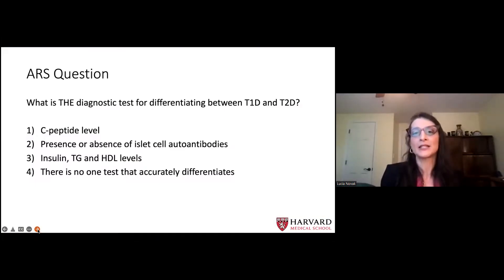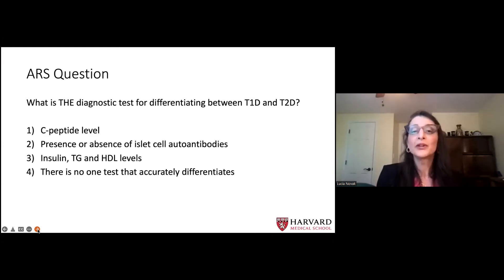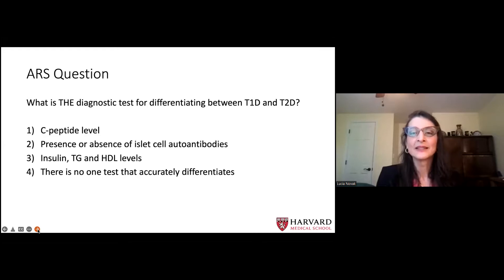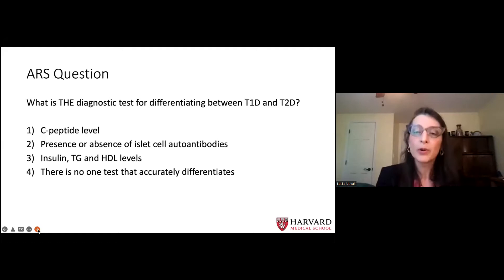So what is the diagnostic test for differentiating between type 1 and type 2 diabetes? Is it a C-peptide level? Is it the presence or absence of islet cell antibodies? Is it insulin, triglycerides, and HDL levels? Or is there no one test that accurately differentiates between type 1 and type 2? The vast majority of you understand that there really is no one test that differentiates between type 1 and type 2. It's going to take an investigative mind and probably a combination of all of these things to help put you on the right path.